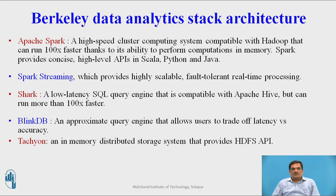Berkeley Data Analytics Stack architecture consists of the following components: Apache Spark, Spark Streaming, Shark, BlinkDB, and Tachyon. Apache Spark is a high-speed cluster computing system that can run 100x faster than traditional systems thanks to its ability to perform computations in memory. Spark provides concise high-level APIs in Scala, Python, and Java.